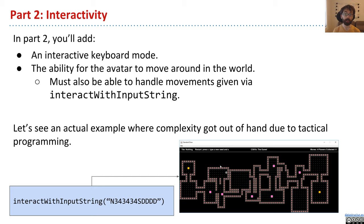So one thing that's very important, and where some of the complexity starts creeping in, is that you need to be able to handle movements given both by interactWithKeyboard, but also interactWithInputString. So if we start the game, or the project up, and we give it the string N343434SDDDD, it's going to create a new world with a seed, and then move the avatar four spaces east, and then return this world you see here as a TETile two-dimensional array.